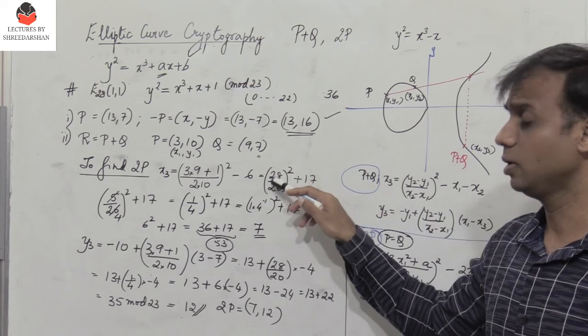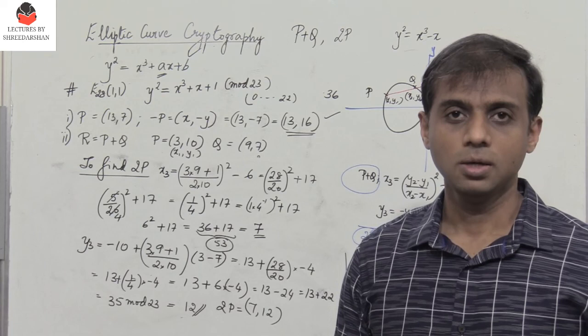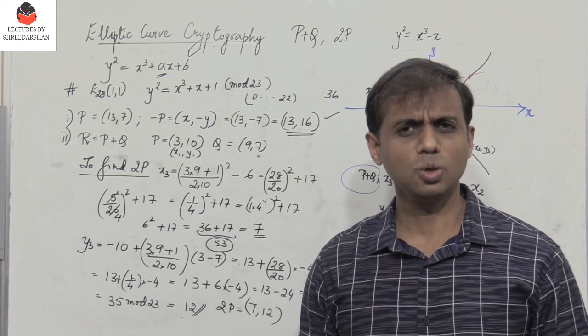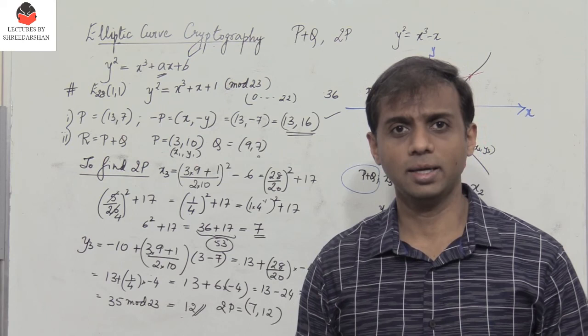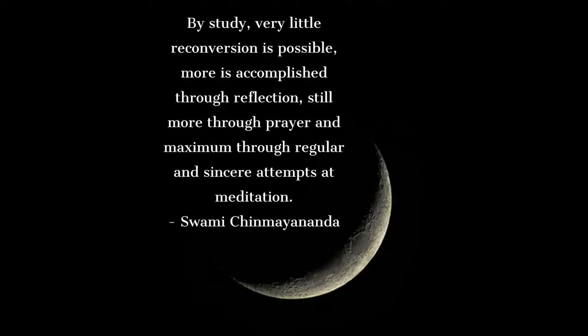Make sure you do the calculations correctly, especially when the elliptic curve is defined in a given modulus — if you have a negative value, add the mod value; if you have a denominator, find the modular inverse. This was the third video on elliptic curve cryptography. Watch the other videos in the series and the full cryptography and network security playlist. Don't forget to like, share, subscribe, and press the bell icon for notifications. Thanks for watching.